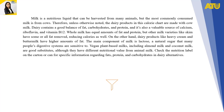Dairy products like heavy cream and buttermilk have higher amounts of fat. The main component of milk is lactose, a natural sugar that many people's digestive systems are sensitive to. Vegan plant-based milks, including almond milk and coconut milk, are good substitutes with different nutritional value from animal milk. Check the nutrition label on cartons for specific information regarding fats, protein, and carbohydrates in dairy alternatives.